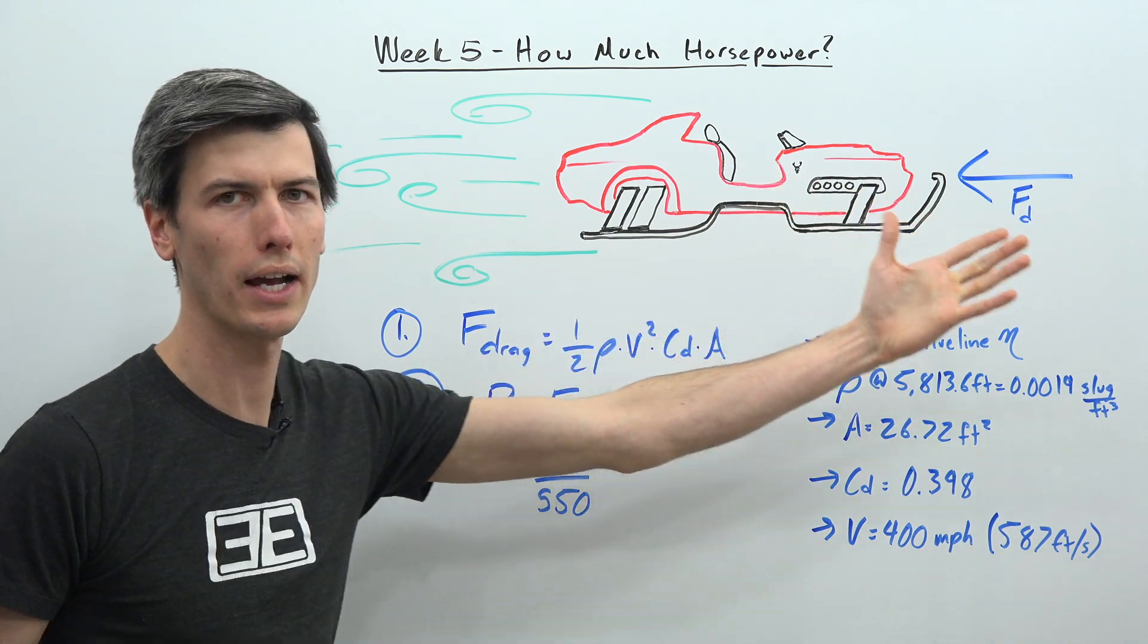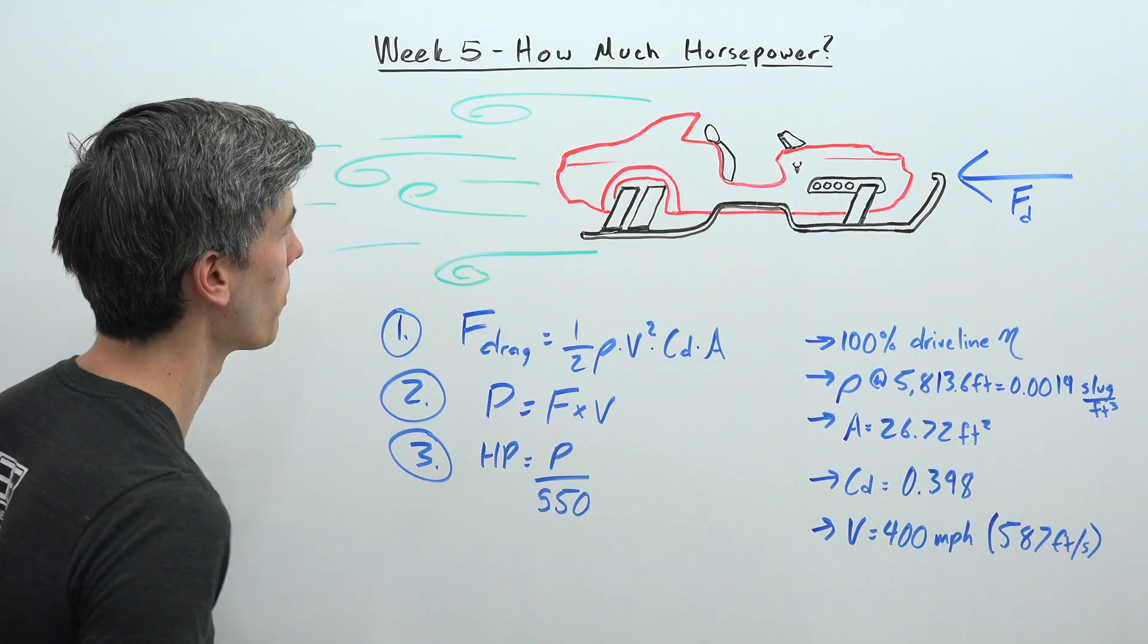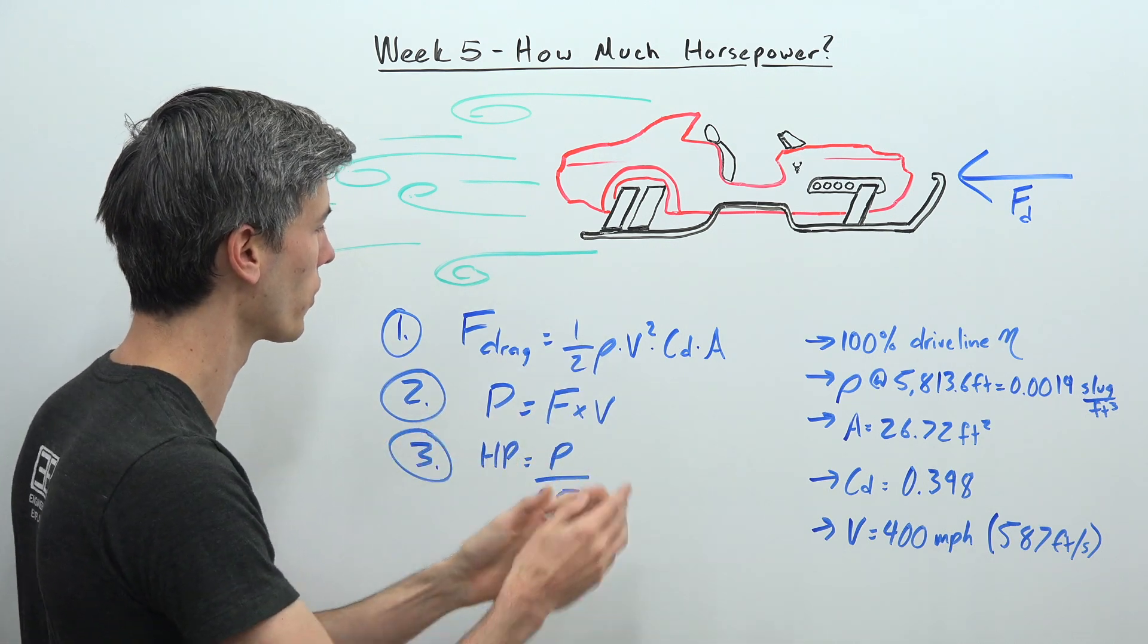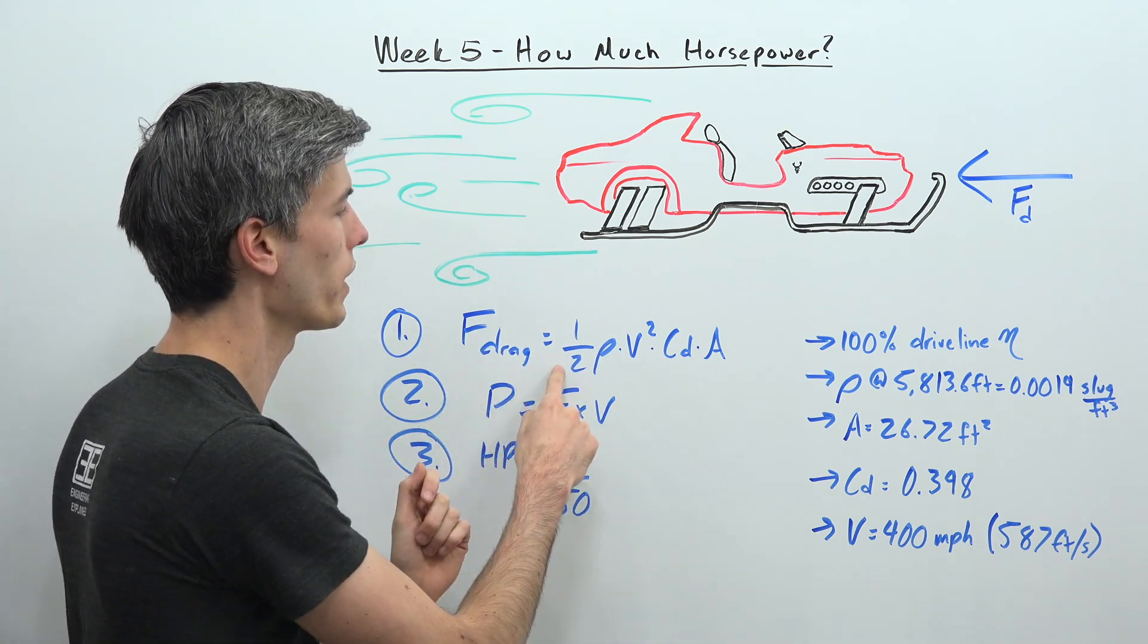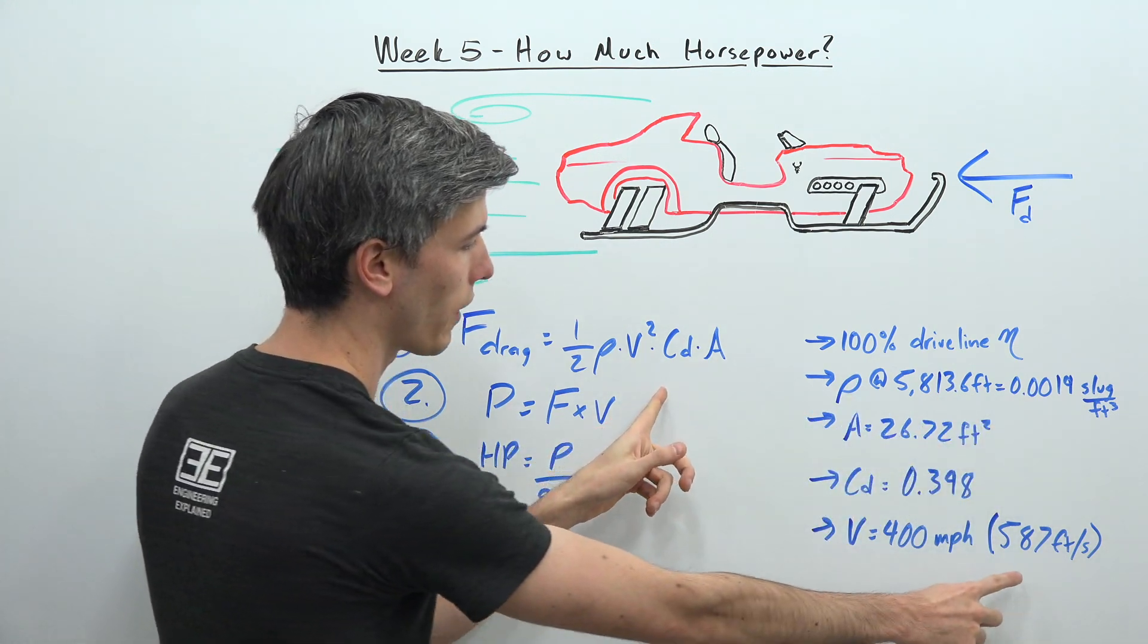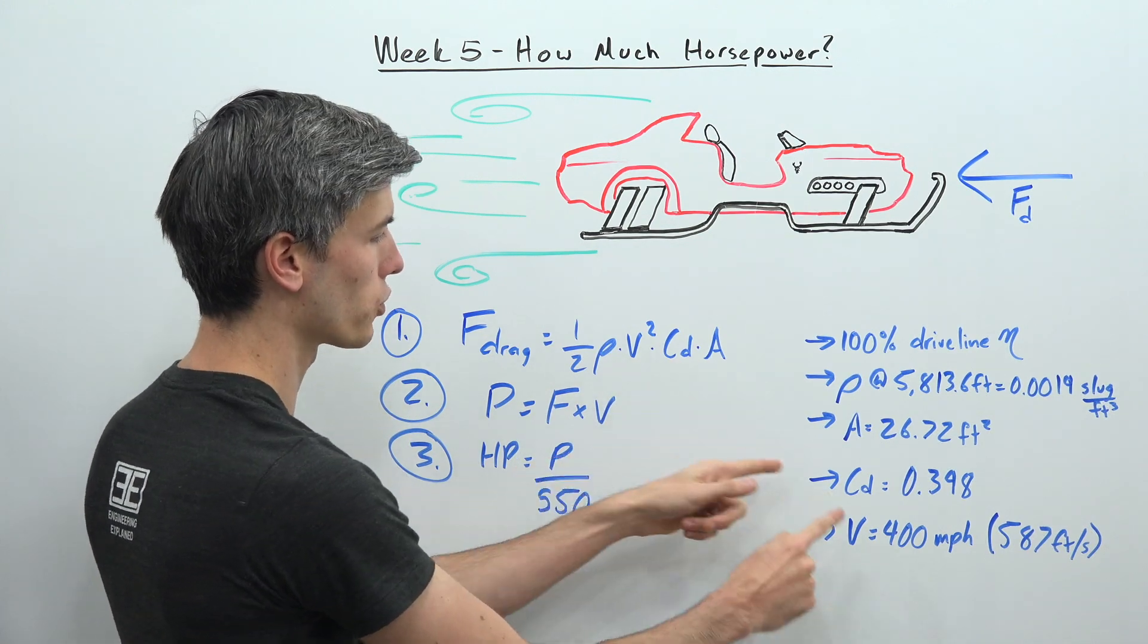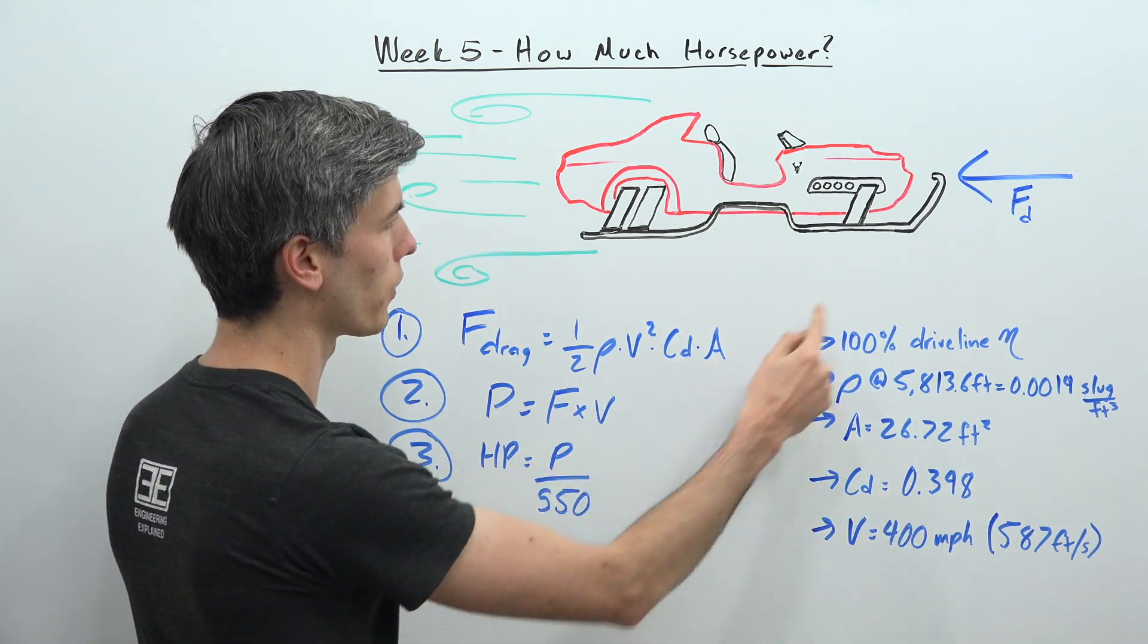So the only force we actually have to calculate here is the force of aerodynamic drag because we're floating up in the air and that's our only resistive force. That force is equal to one-half multiplied by air's density multiplied by our velocity 587 feet per second squared multiplied by our drag coefficient multiplied by the frontal area of this sleigh.